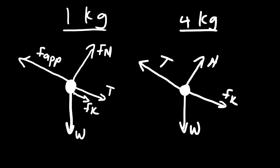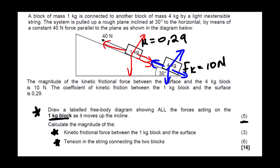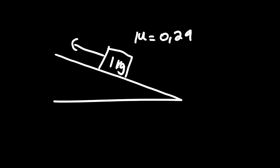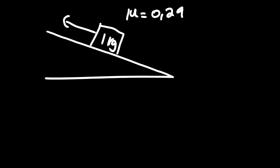Our next question asks us to calculate the magnitude of the kinetic frictional force between the 1 kg block and the surface. For this block we are only given the coefficient and the mass, so we can calculate the kinetic friction. There is a lesson video where we look at different scenarios and how to calculate normal force and kinetic friction. The equation to calculate kinetic friction is Fk equals μN, where this is the coefficient and this is the normal force.